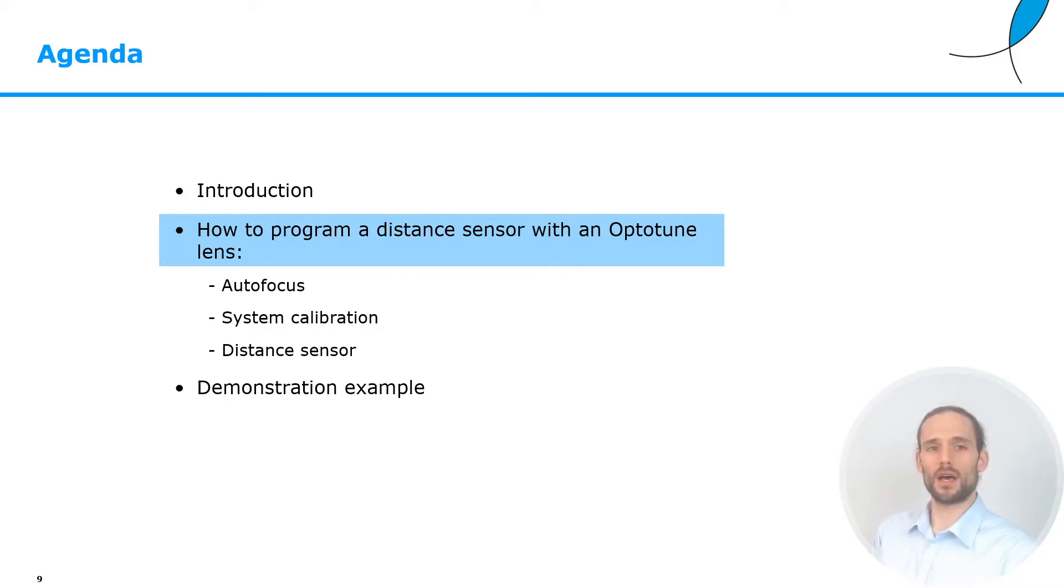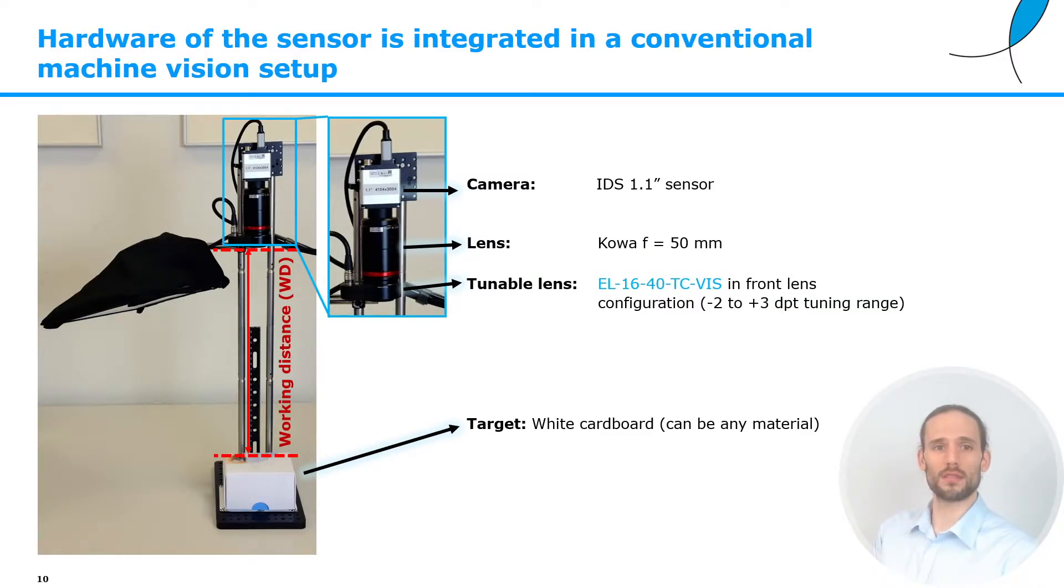Let's now have a close look at the software of how to program a distance sensor from a software perspective. Before diving into the details of the software, I would like to show you the hardware with which we have been experimenting and validating all the things that I will show you in the next slides. We have a CMOS camera, a fixed focal length lens with a focal length of 50 mm in this case, and in front is screwed our EL-1640 TC, which is our large clear aperture lens, which is widely used in machine vision applications.